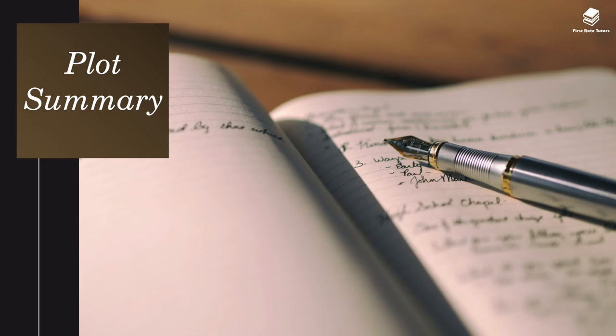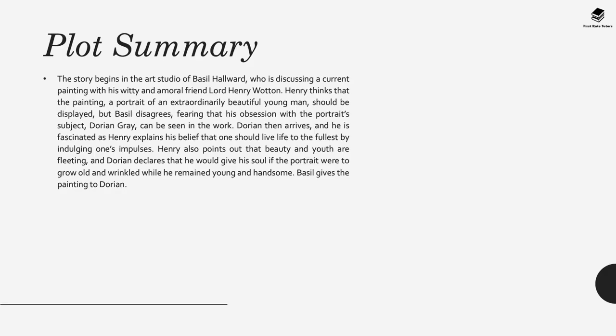Broadly speaking, the story begins in the art studio of Basil Horwood, who is discussing a current painting with his witty, amoral friend Lord Henry Wotton. Henry thinks the portrait of an extraordinarily beautiful young man should be displayed, but Basil disagrees, fearing his obsession with the subject—Dorian Gray—can be seen in the work and might reveal his own soul. Dorian arrives and is fascinated as Henry explains his belief that one should live life to the fullest by indulging one's impulses—a very hedonistic life. Henry also points out that beauty and youth are fleeting, and Dorian declares he would give his soul if his portrait were to grow old and wrinkle while he remained young and handsome. Basil then gives the painting to Dorian as a gift.